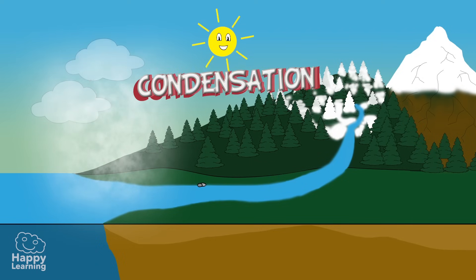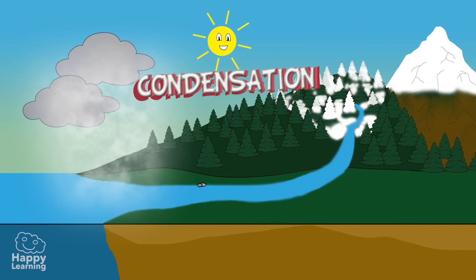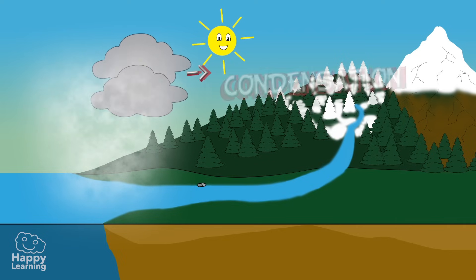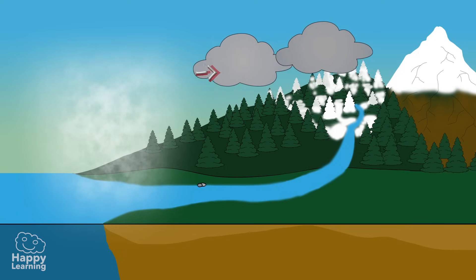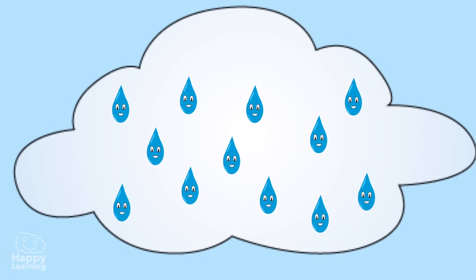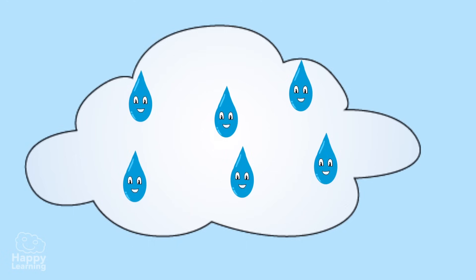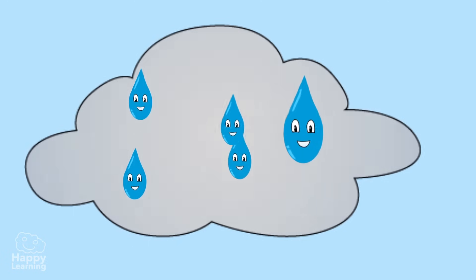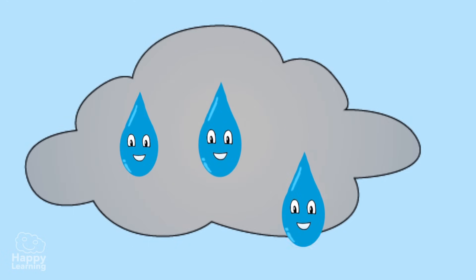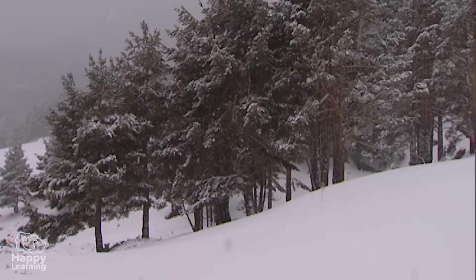Once the water has condensed and turned into a cloud, it continues its amazing journey by being blown by the wind, traveling from one place to another. Clouds are actually tiny little drops of water suspended in the air. But when the clouds grow, they collect more and more water. These water drops then crash into each other and become bigger drops of water. Then, at some point, they will end up falling to the ground in the form of rain or even snow.